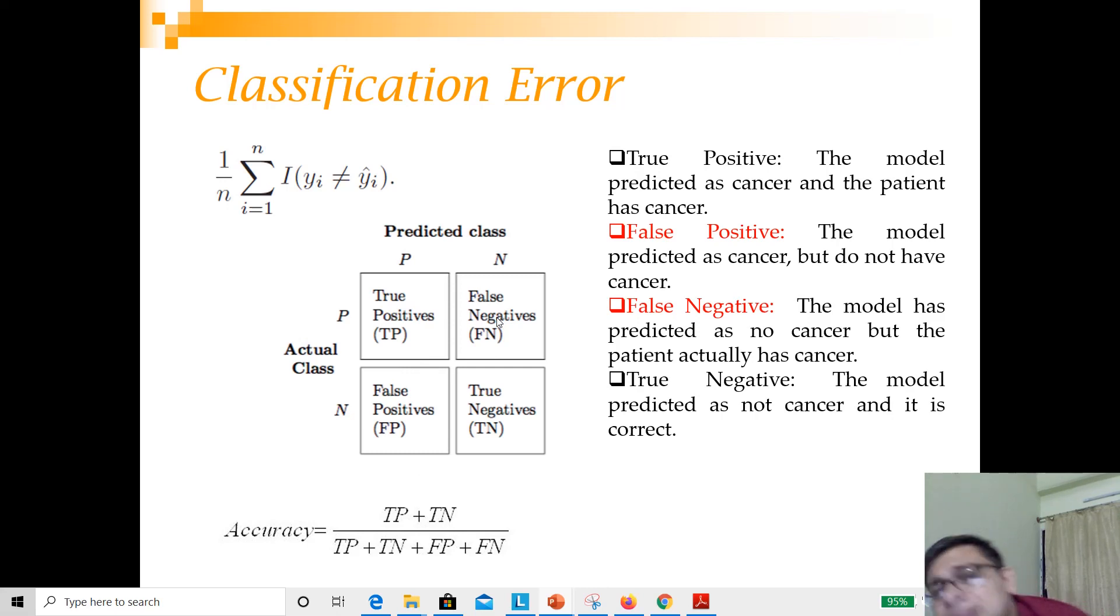Let me give another example. You have surveillance cameras in the airport and you're trying to identify passengers as a security threat or not. Security threat is positive class, not security threat is negative class. When it's false positive, you've predicted someone to be a security threat but he is not. He will be irritated, frustrated, and then he will go. But what about false negative? He was actually a security threat but you could not identify him. You can think of the repercussions - the entire airport can be blown off. That's the reason you cannot always treat false positive and false negative similarly.